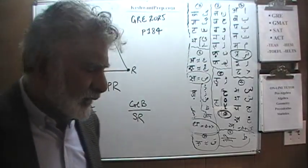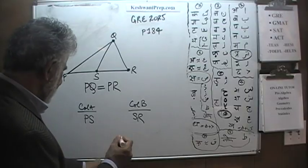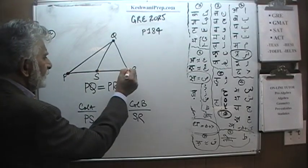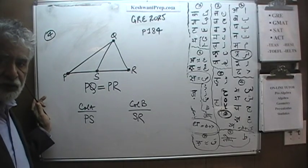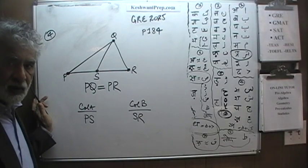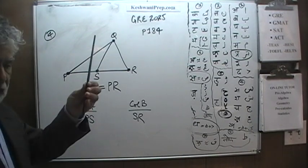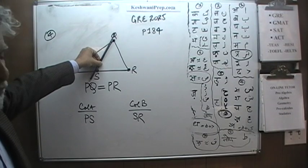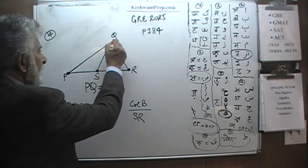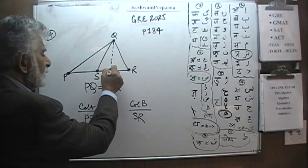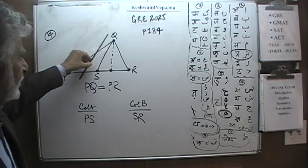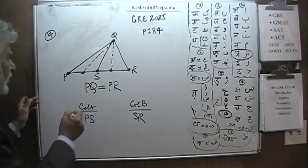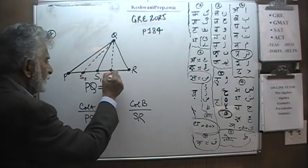What we are interested in is this distance from P to S versus S to R. And because of the fact that the picture is not drawn to scale, we really don't know where this is. Because it is not drawn to scale, we don't know. Maybe in reality it is here, or maybe it is sitting like this. In which case, let's call it S1, this will become S2, S3.